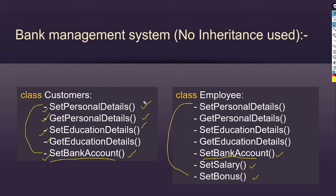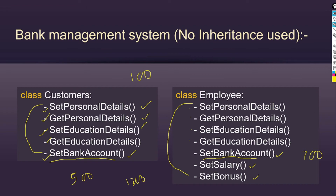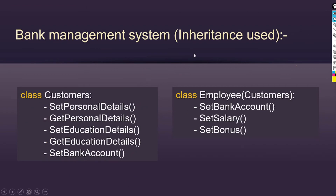Employee class also has two additional methods: set salary and set bonus — which customers don't have because customers don't receive a salary. Now consider each method requires 100 lines of code. The customer class has 5 methods, so 500 lines; the employee class has 7 methods, so 700 lines. Without using inheritance, the total is 1200 lines. Here, the code is not being reused — it is being repeated — the same code exists in both classes within the same project.